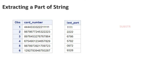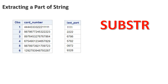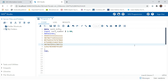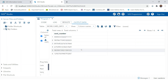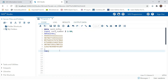Now how about in SAS? Don't worry — in SAS we have SUBSTR, which stands for sub string. The syntax is quite identical to MID: you just provide SUBSTR, then the source variable which is card number, then the starting position, then the number of characters you want to separate. Let's look at a practical example.